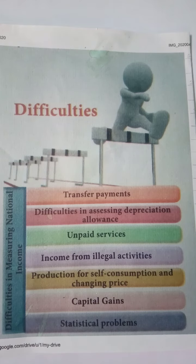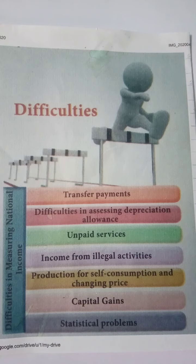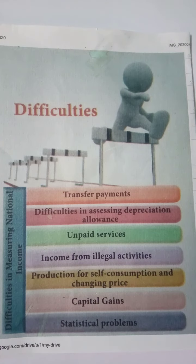Today we have discussed about the difficulties in measuring national income. Let us see the main points: transfer payment, difficulties in assessing depreciation allowance, unpaid services, income from illegal activities, production for self-consumption and changing price, capital gains, and statistical problem. This is all about the difficulties in measuring national income.